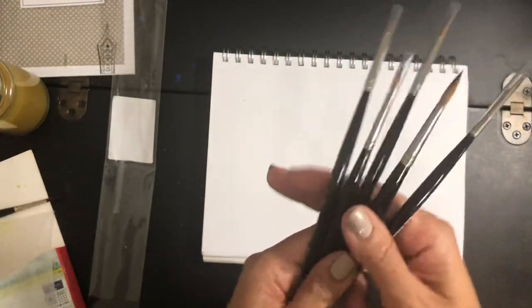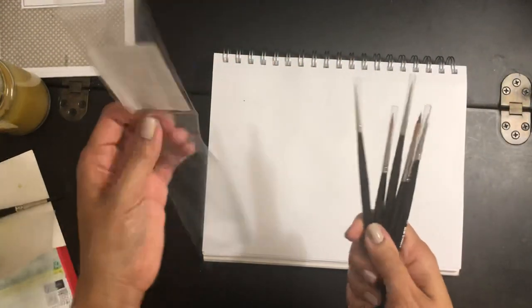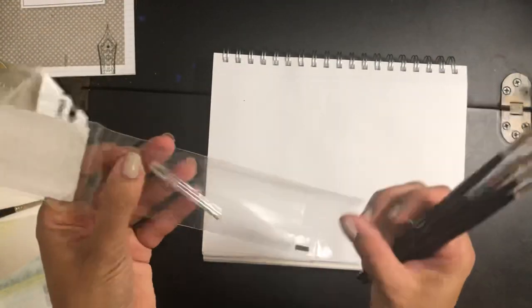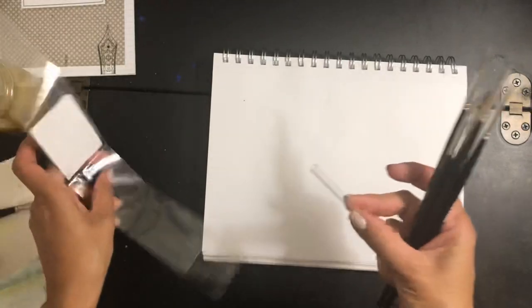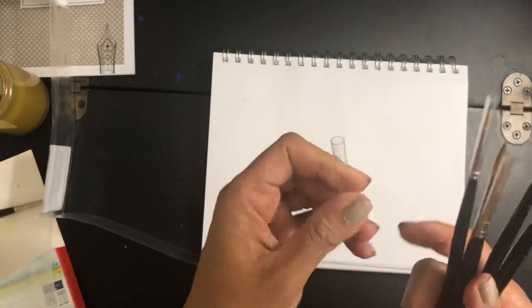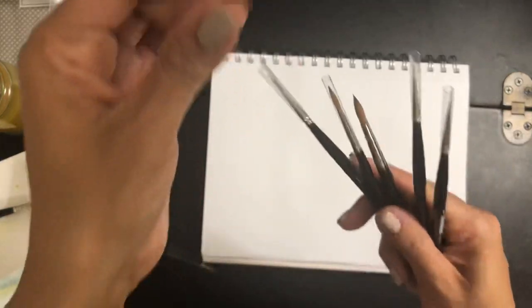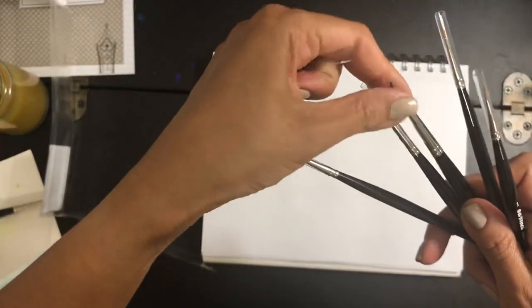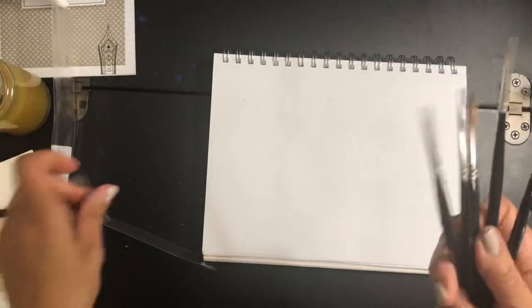So you get five brushes. They all come with this little protective tip, which I remove immediately after I get them because trying to put this back always pushes the hairs back and you'll ruin your brush.